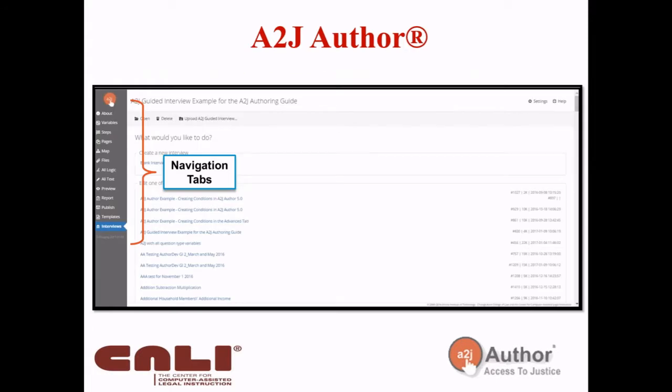The first thing to talk about in A to J Author — I have screenshots here, but we can go into the live software if you have questions. This is A to J Author 6, running live in our production site right now at www.atajauthor.org. The first thing you need to know is our navigation system. We have navigation tabs along the left-hand side of the screen, and we'll go through them in order today.